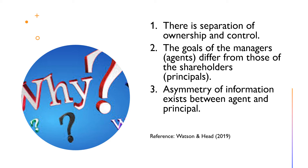Second, the goals of the managers — the agents — differ from those of the shareholders — the principals. Human nature being what it is, managers are likely to maximize their own wealth. Managers are also concerned with their personal wealth, job security, and fringe benefits. Such concerns may cause managers to make decisions that are not consistent with shareholders' wealth maximization. Third, asymmetry of information exists between agent and principal. Managers run the company on a day-to-day basis and consequently have access to management accounting data and financial reports, whereas shareholders receive only annual reports. To conclude, conflict between shareholders' and managers' objectives creates agency problems.